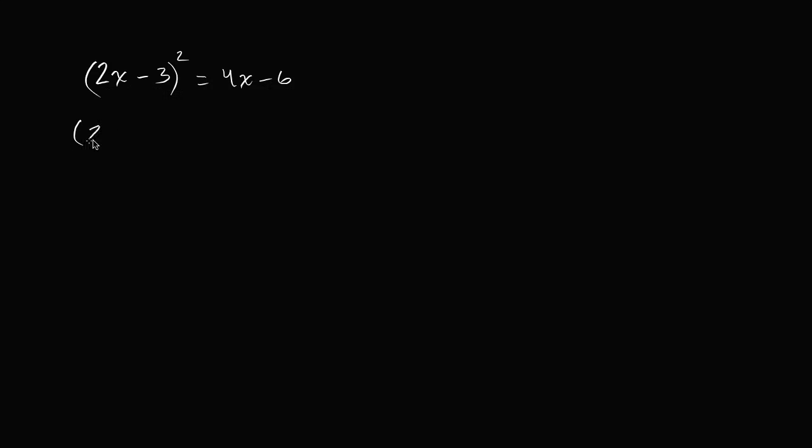So this is the same thing as 2x minus 3 squared is equal to 4x minus 6. If I factor out a 2, that's 2 times 2x minus 3. And so this is really interesting. We have something squared is equal to 2 times that something. So if we can solve for the something, let me be very clear here.